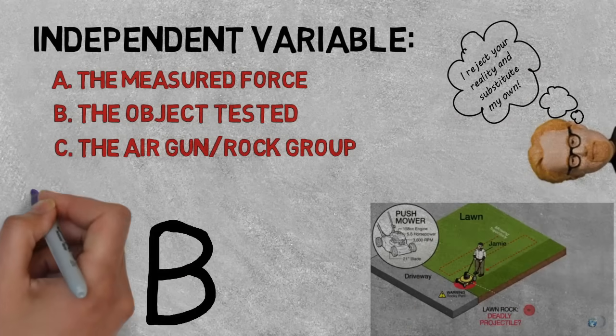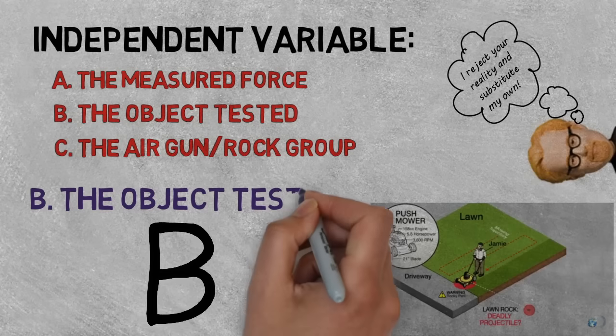The correct answer is B, because B explains the difference between the experimental and control groups.